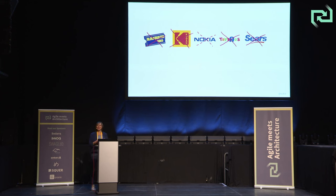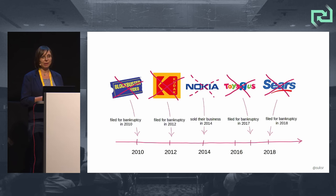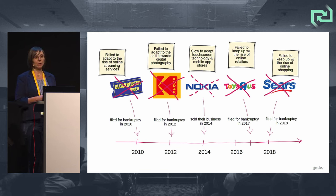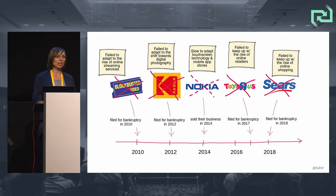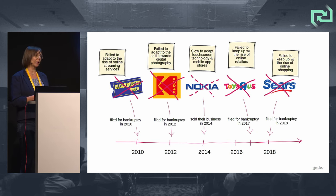They have in common that they don't exist anymore, or at least not with their original core business. All of these companies filed for bankruptcy or sold their core business. But why? What were the reasons for those companies to shut down or sell their businesses? The major reason was the failure to adapt — these companies failed to adapt to and keep up with new and changing circumstances.